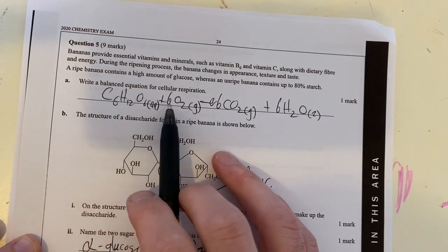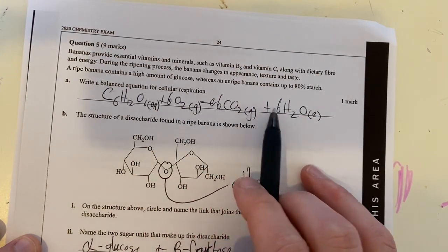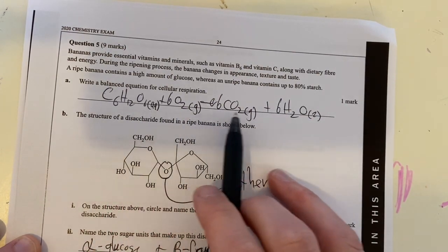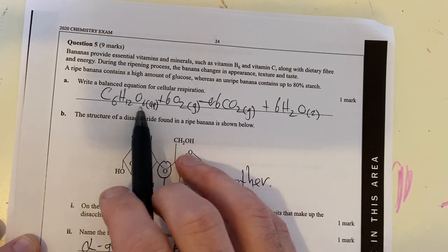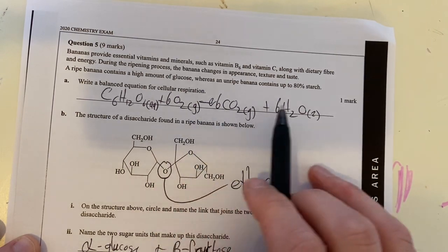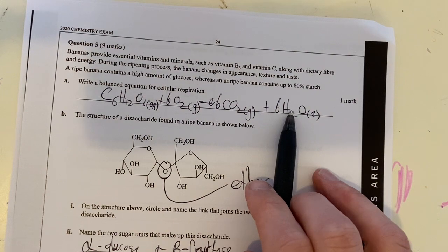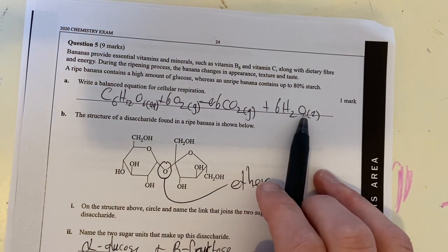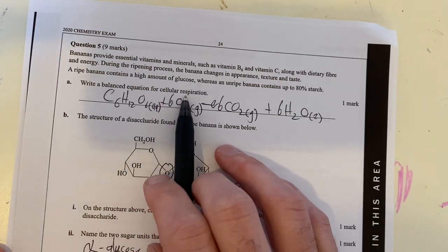Write a balanced equation for cellular respiration. This is pretty straightforward. It's simply glucose reacting with oxygen to form carbon dioxide and water. The balancing is the same as photosynthesis, which is the reverse anyway. It's 6-6-6, and I put in my states as well: C6H12O6(aq) + 6O2(g) → 6CO2(g) + 6H2O(l). That is my cellular respiration equation.